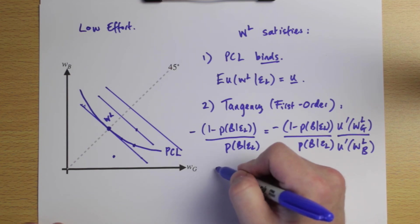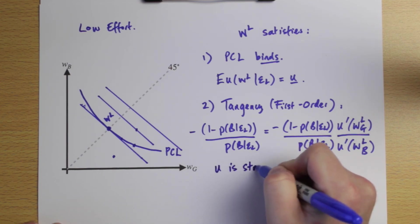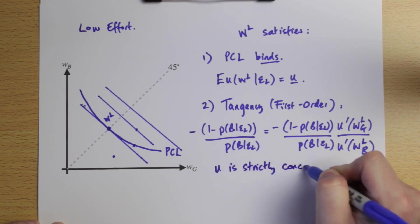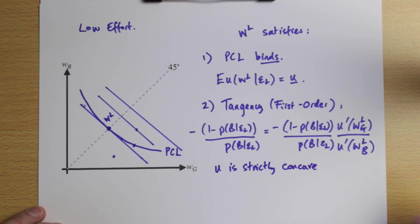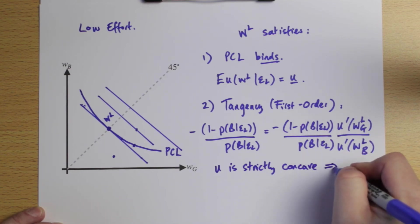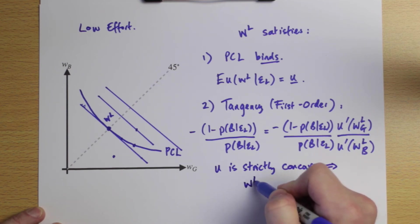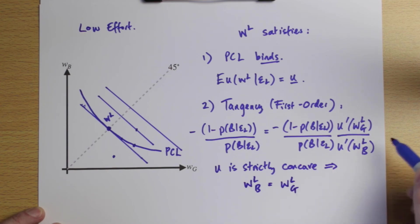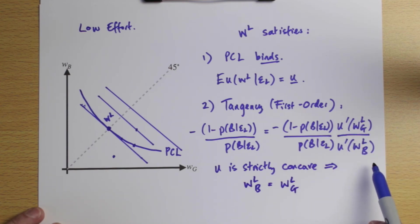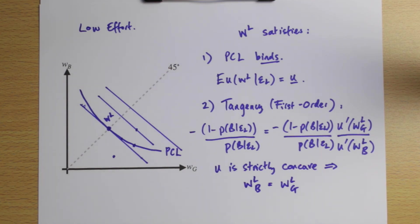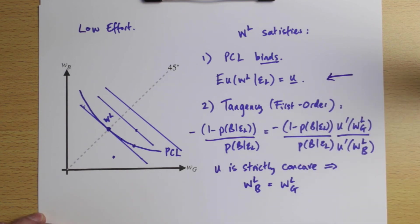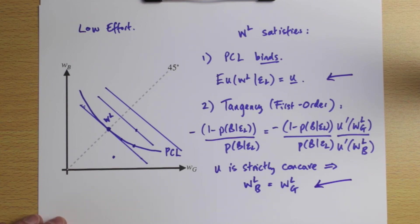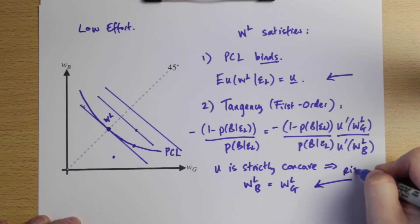This tangency condition is familiar from utility maximization problems like the Rothschild-Stiglitz insurance model — here it's a dual cost-minimization version but the first-order conditions are identical. Because U is strictly concave, marginal utility is strictly decreasing and positive. This equation implies that WLB must equal WLG — the ratio of marginal utilities must equal one, meaning those marginal utilities are equal, and since marginal utility is strictly decreasing, the wage values must be the same.